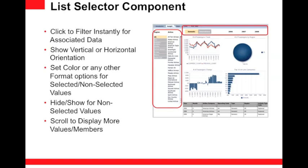For example, by clicking a value or values in that list, you can filter the charts, table, or crosstab displayed in the same report. You can choose to show it in a vertical or horizontal orientation, set colors for selected or non-selected values, and choose to hide or show non-selected values. There is also a scroll bar for when you have many values in the list component.